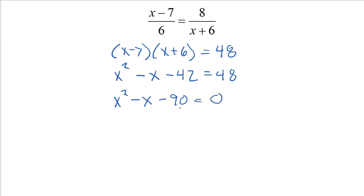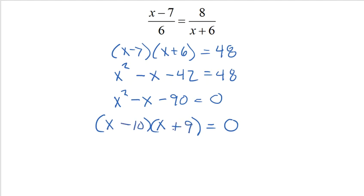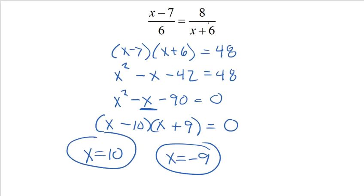This is actually factorable. 10 times 9 breaks apart 90, and if I make it negative 10 and positive 9, I get negative 1 in the middle. On the outsides, 9x; on the inside, negative 10x — that combines to negative x in the middle, and I get negative 90. So x equals 10 or x equals negative 9. Checking those in the denominators, neither gives a 0, so both are valid solutions.